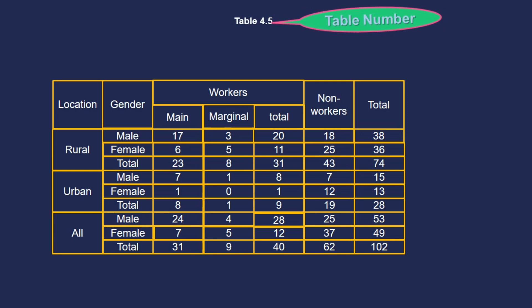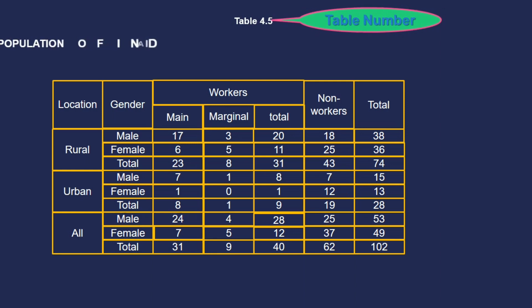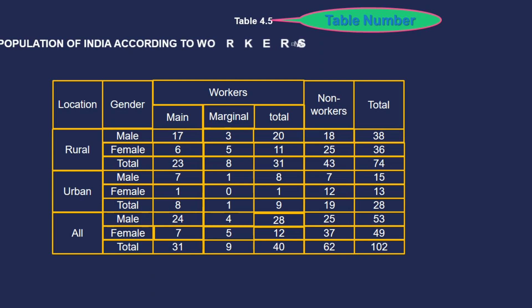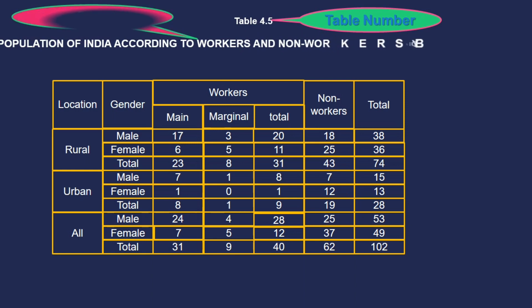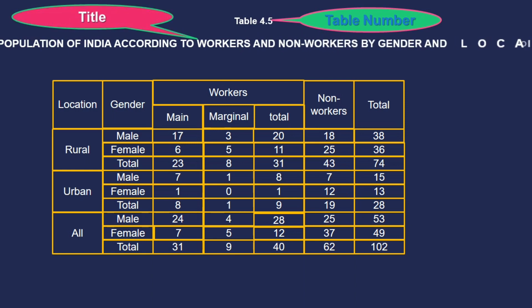Table 4.5 — this is the Table Number. The title is: 'Population of India according to workers and non-workers by gender and location, 2001.'